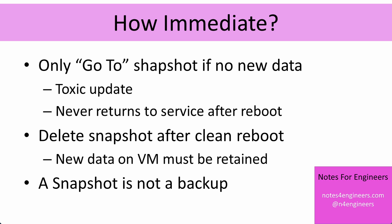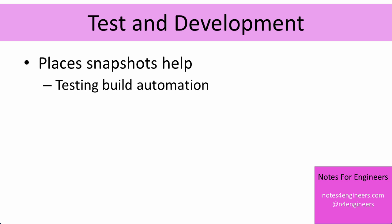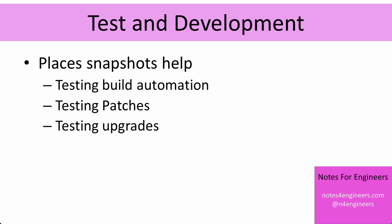So snapshots themselves enable virtual machine backups, but they are not a backup of their own. At most, they will allow you to back out a toxic update. The most common place to use snapshots is in a test and dev environment. In production, not so much. But in test and dev, snapshots are extremely useful for things like testing build automation. Going through a build process that might have 15 or 20 application installs and being able to snapshot part way through and test the application install — if it doesn't work quite right, you can go back to the snapshot. Even better: testing patches, testing upgrades. It's also useful to test the order in which you need to do a series of upgrades and patches, reverting and trying different orders.